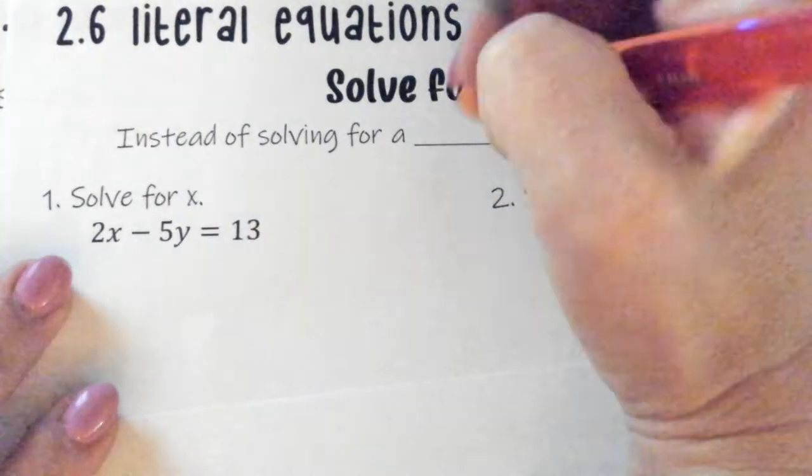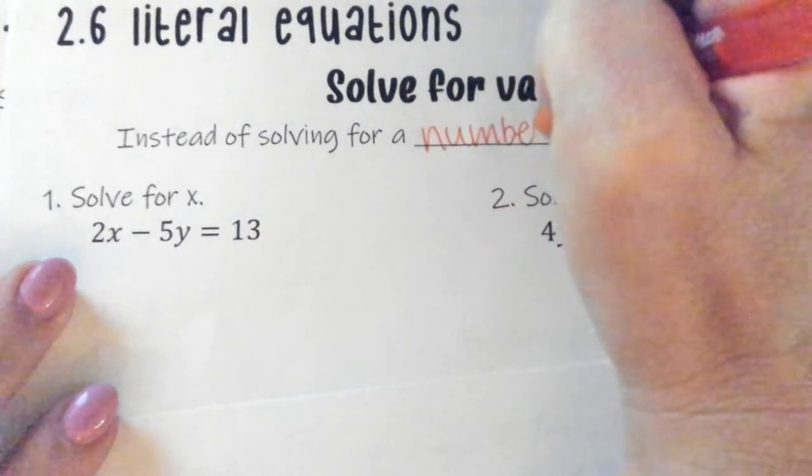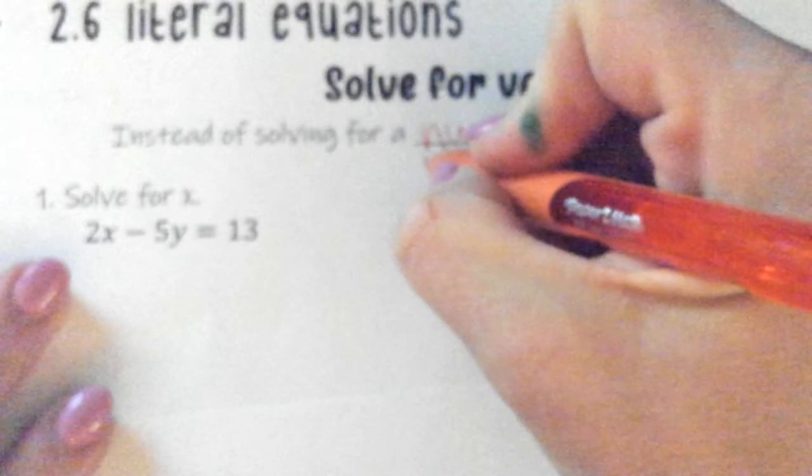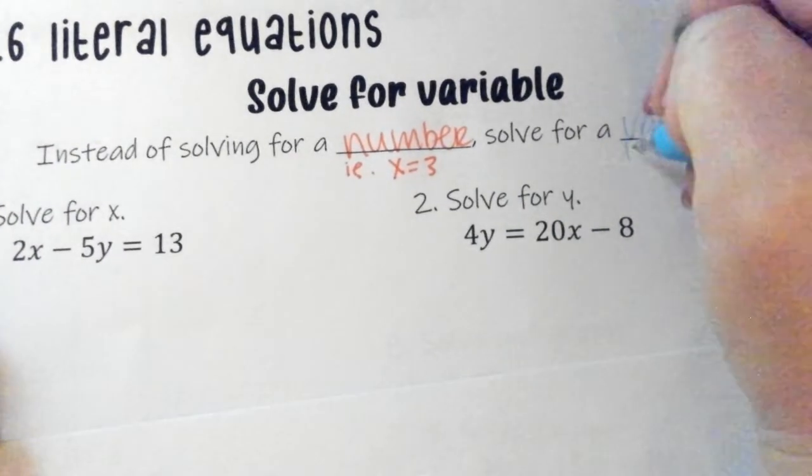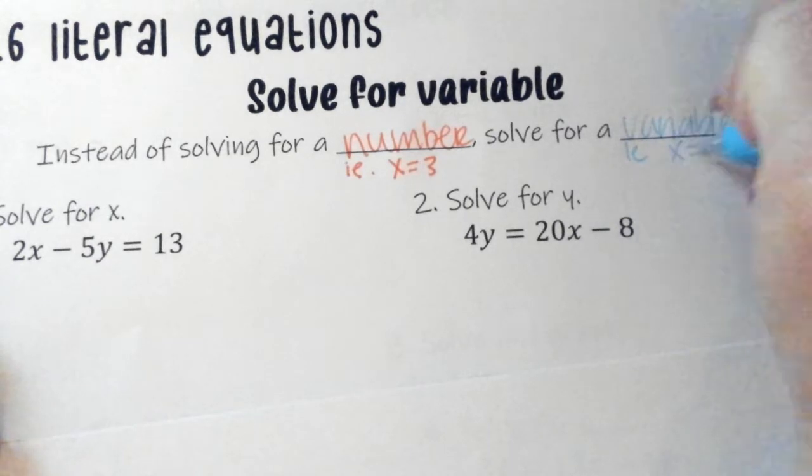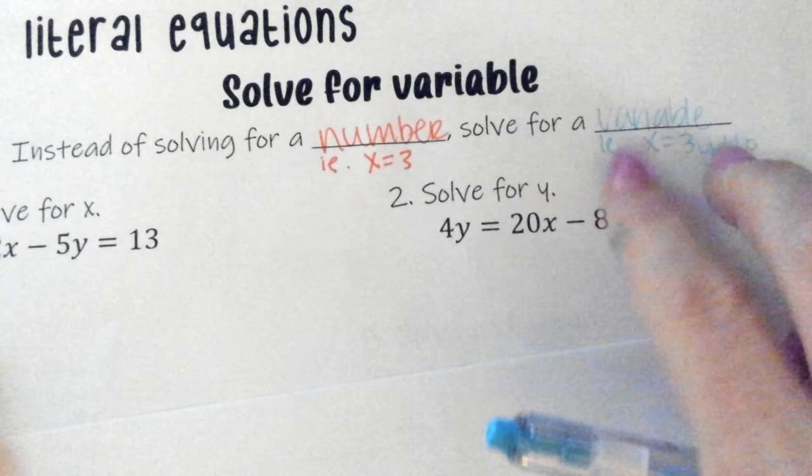Instead of solving for a number like x equals 3, we're going to solve for a variable. An example would be x equals 3y plus 10. We're going to have both of those variables.